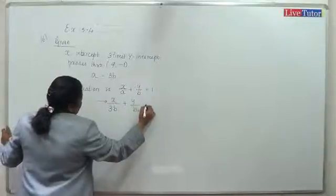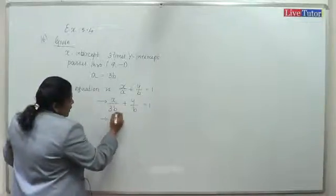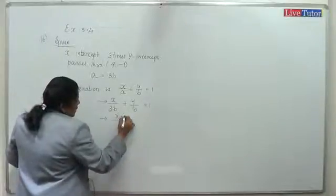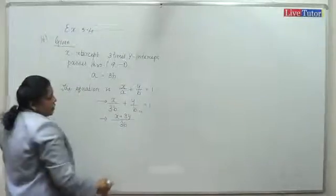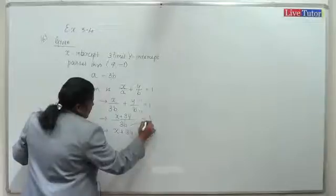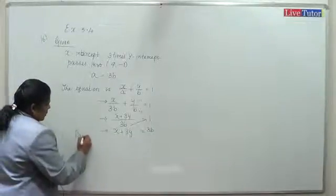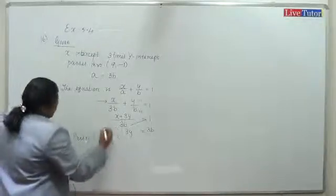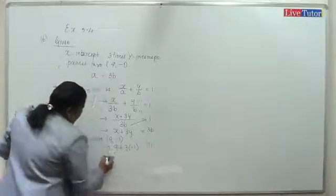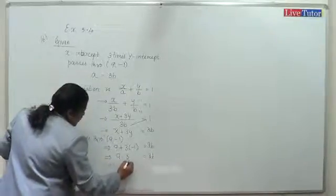Plus y by b is equal to 1. Substituting the point (9, -1) into this equation, we work through the calculation. This becomes: substituting gives us a result, and 3b value is equal to 6.